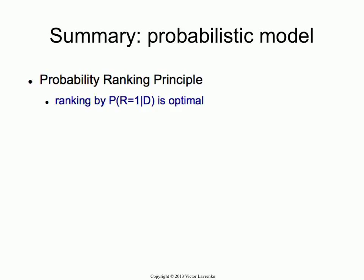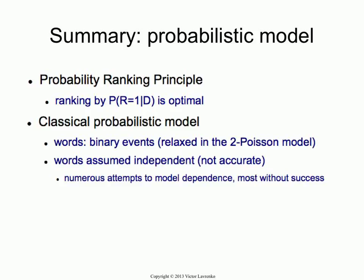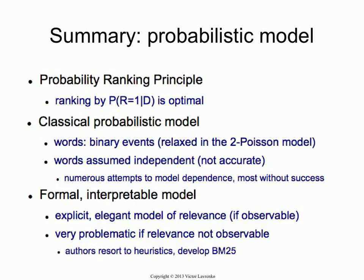To summarize, the probabilistic model's key insight is: if you can estimate the probability of relevance, you're all set because that gives you the best performance. The classical model tries to estimate this probability of relevance given the document, making assumptions such as words are binary events — which is relaxed in the two-Poisson model (BM25) — and that words are independent, which isn't accurate but nobody has a better approach. The model is formal, interpretable, and an explicit model of relevance. The real ugliness is what happens when nobody gives you examples of relevant documents — that's where the model falls apart and they resort to heuristics.